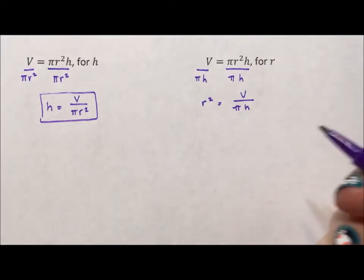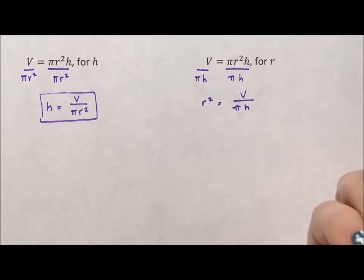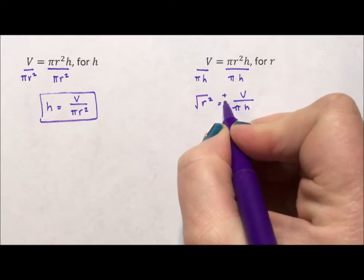When you, as a person solving a problem, introduce a square root, which is the inverse of a square, you have to acknowledge that the square root could come from a positive or a negative place.